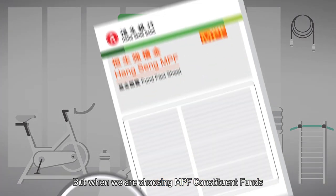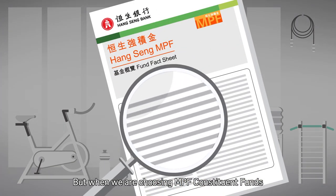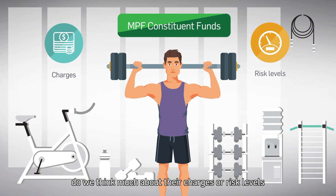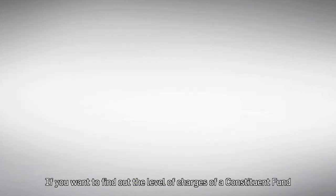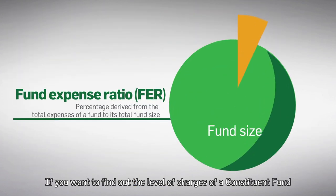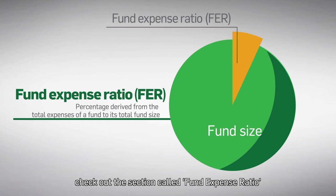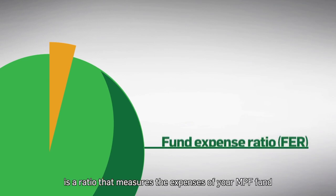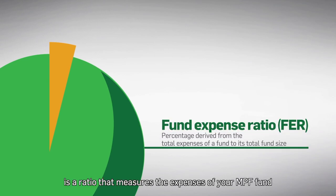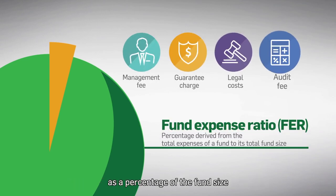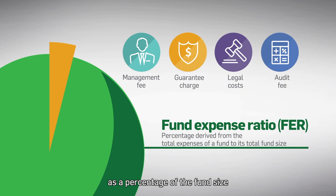But when we are choosing MPF Constituent Funds, do we think much about their charges or risk levels? If you want to find out the level of charges of a constituent fund, check out the section called Fund Expense Ratio. Fund Expense Ratio is a ratio that measures the expenses of your MPF fund as a percentage of the fund size.